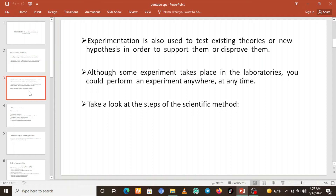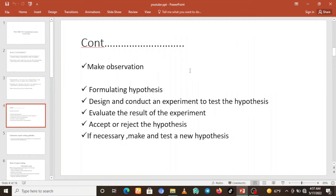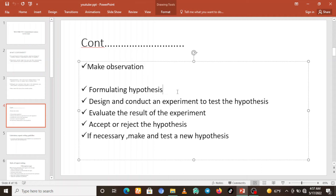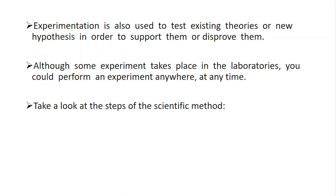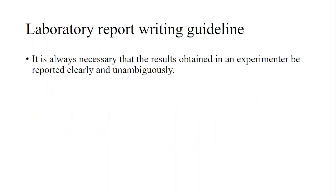When someone performs an experiment, they must follow the scientific method. The steps are: first, make observations; second, formulate a hypothesis; third, design and conduct experiments to test the hypothesis; fourth, evaluate the results; and fifth, accept or reject the hypothesis, modifying it if necessary.